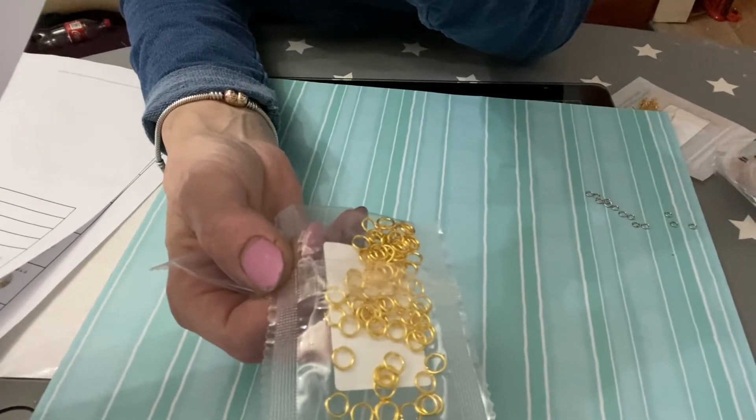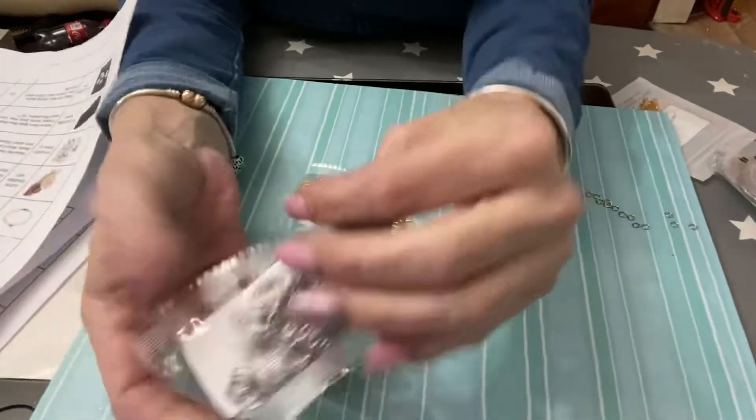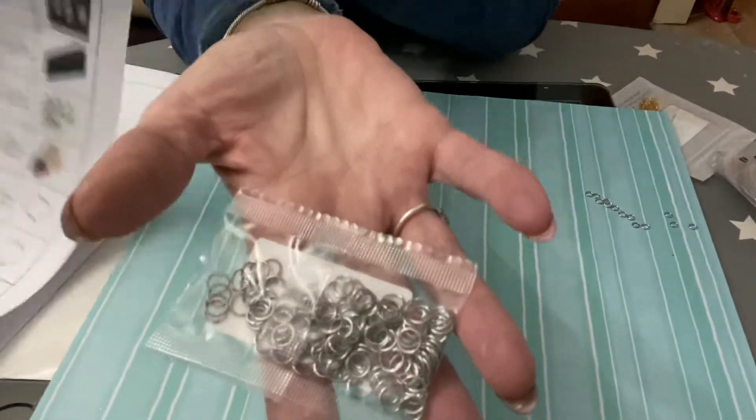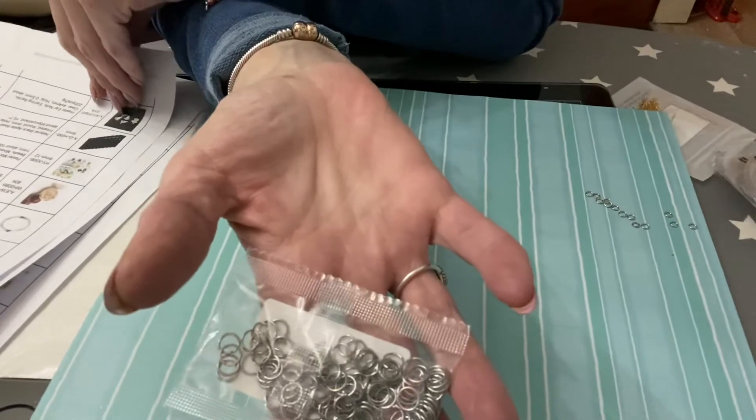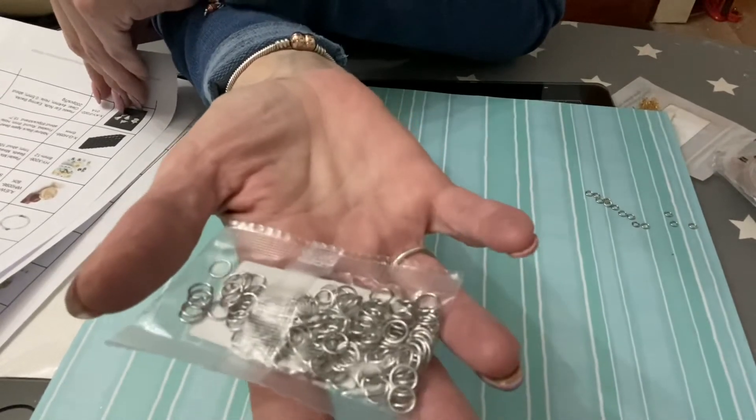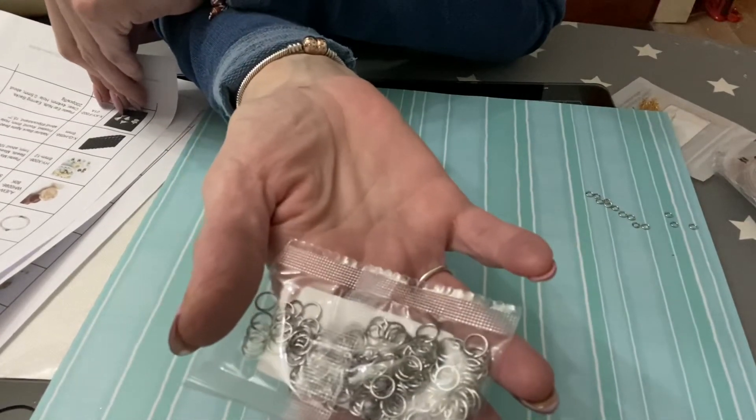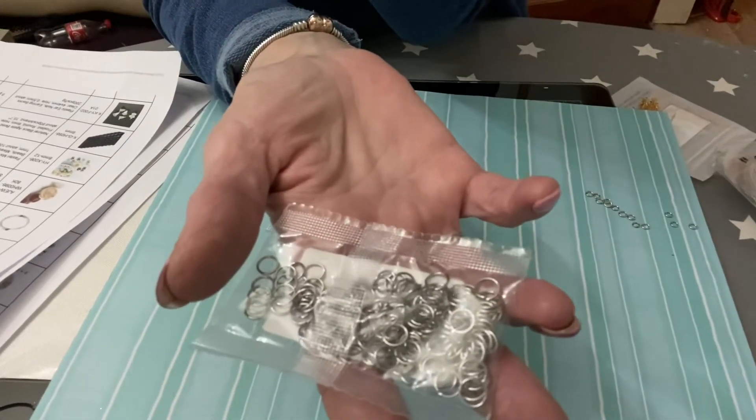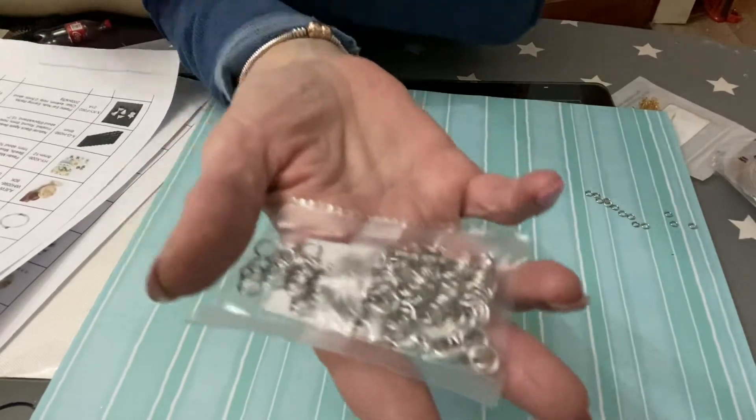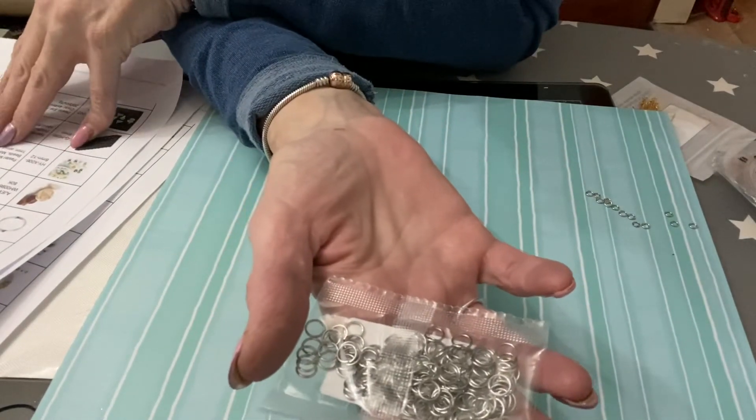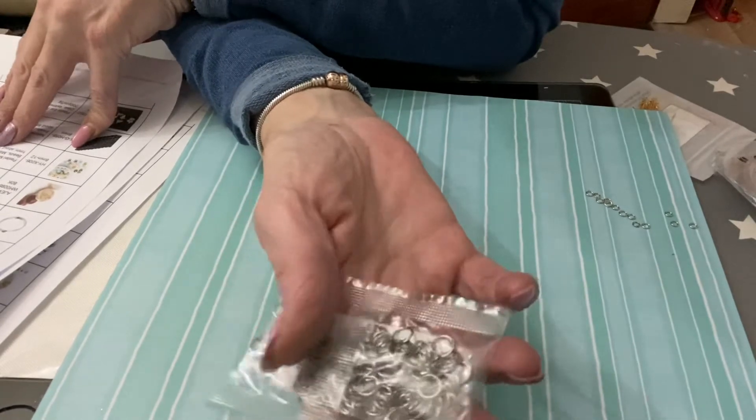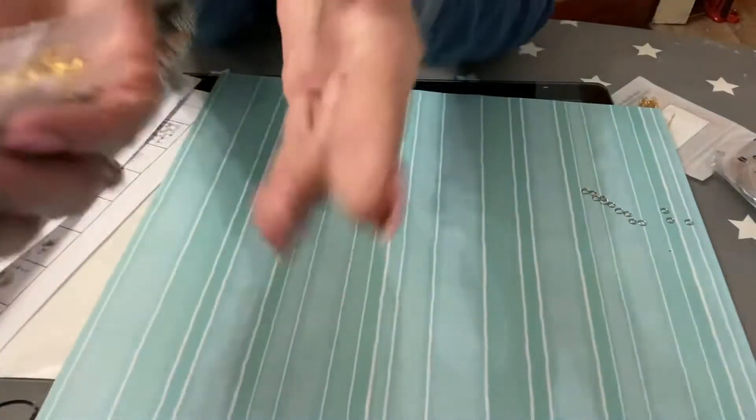And then we have these ones which are the iron color or stainless steel color. They're 20 gauge and they're 7mm with the inner diameter of 5.4mm. Again there's 10 gram and there's 120 pieces approximately and they were 49 pence. So I've got them in gold and in the stainless steel.